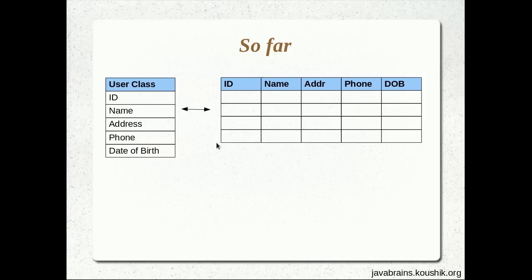This is all fine, but we are making one assumption here. We are assuming that the member variables inside this model object can all go inside single columns. We made the assumption that an ID can be just one column, the name member variable can be one column, and so on. The example we've taken allows this — it's possible to have single columns for each member variable because of the data types being used.